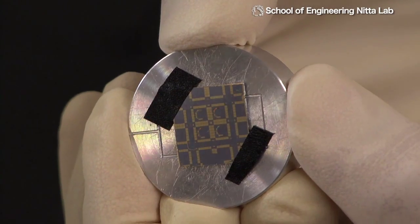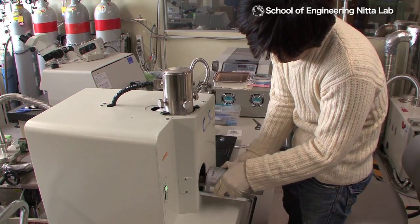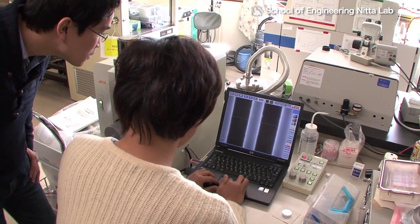However, controlling the direction of spin at the electron level is considered very difficult. So far, no clear method for such control has been found.